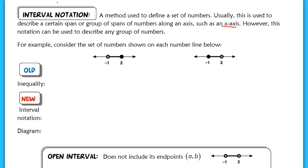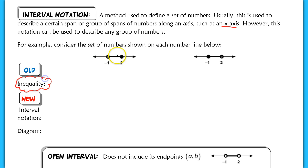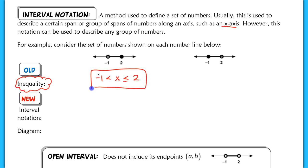Let's look at each of these diagrams and consider the sets of numbers being shown. Our old method for describing this range of numbers would be to use an inequality. We would write negative 1 less than x, less than or equal to 2. This inequality denotes all real numbers between negative 1 and 2. Negative 1 has an open circle, meaning it's not included — x cannot equal negative 1 — but x can equal 2 because it is included.